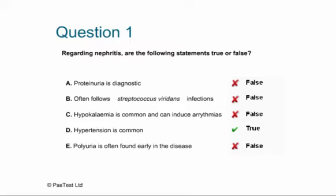B: Often follows staphylococcal infections — that's a classic example of a question where one thing has been replaced with another. It should be streptococcal infections, not staphylococcal, so the answer is false. C: Hypokalemia is common and can induce arrhythmias — also false. The potassium abnormality you sometimes see is hyperkalemia, not hypokalemia.